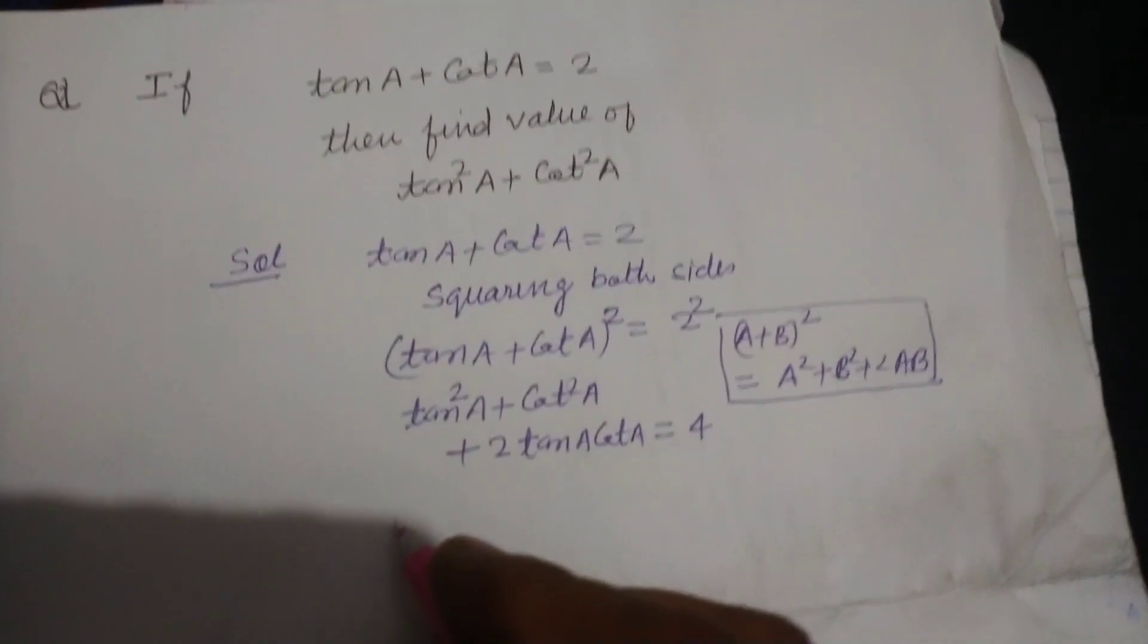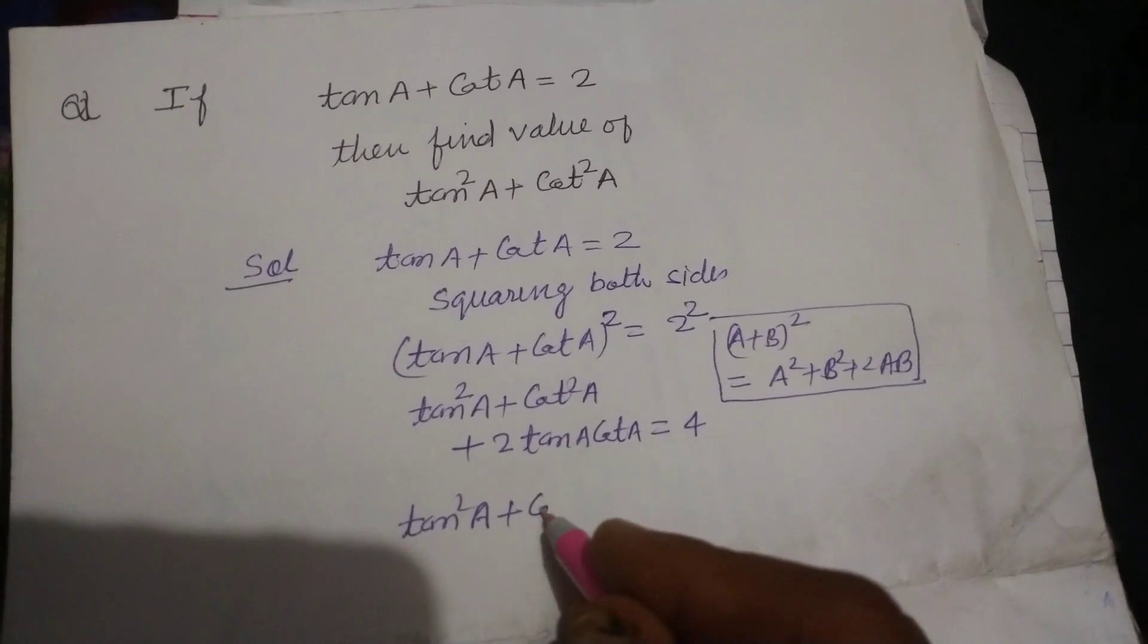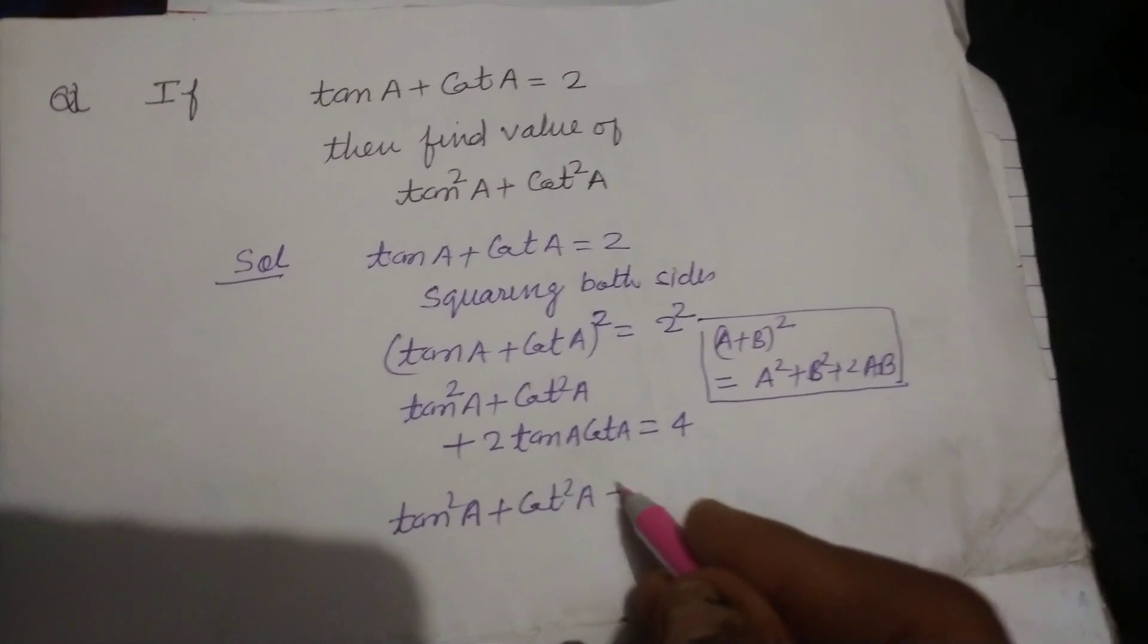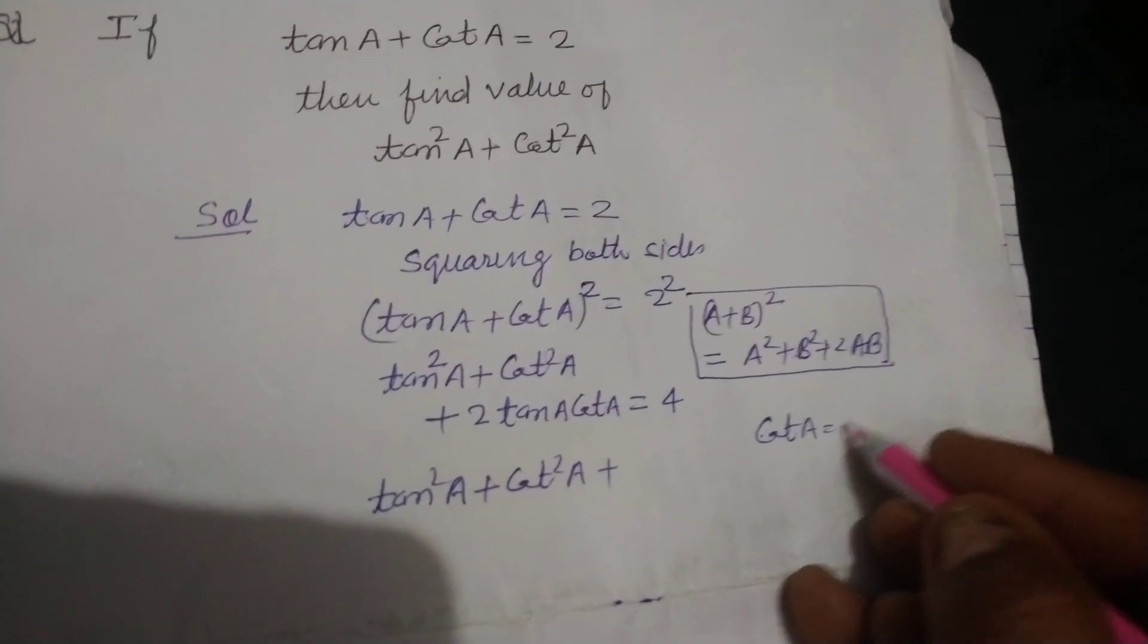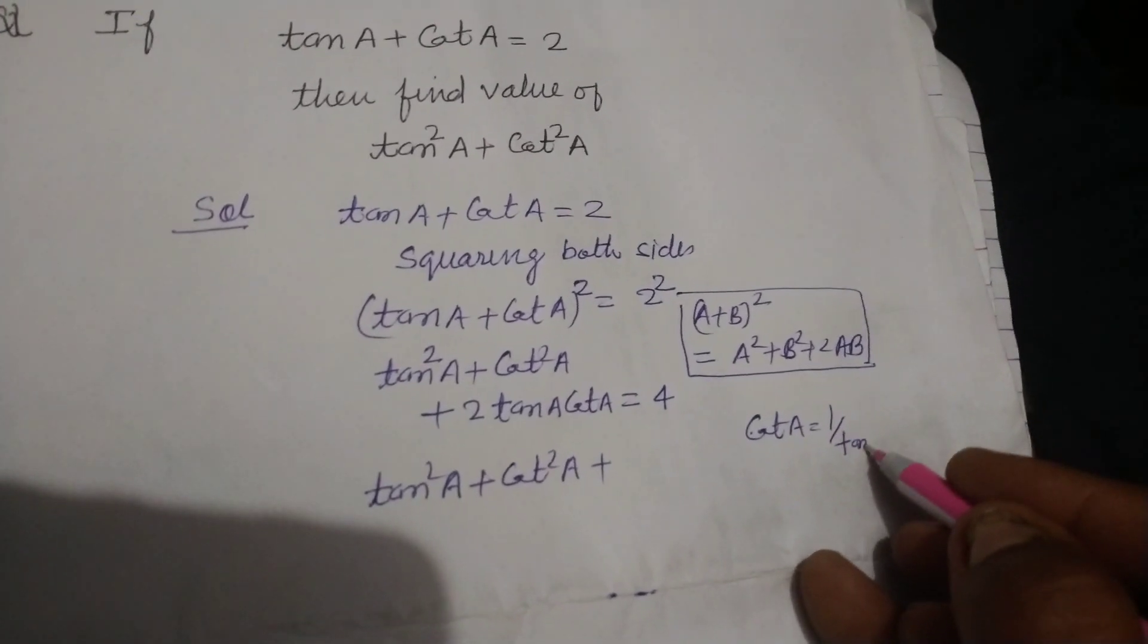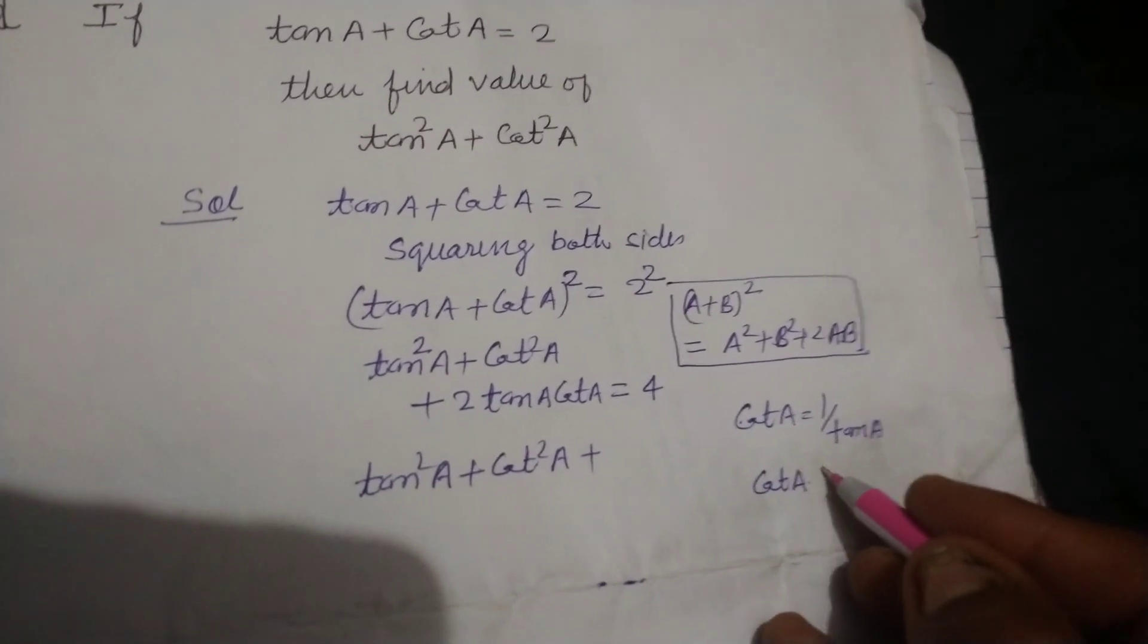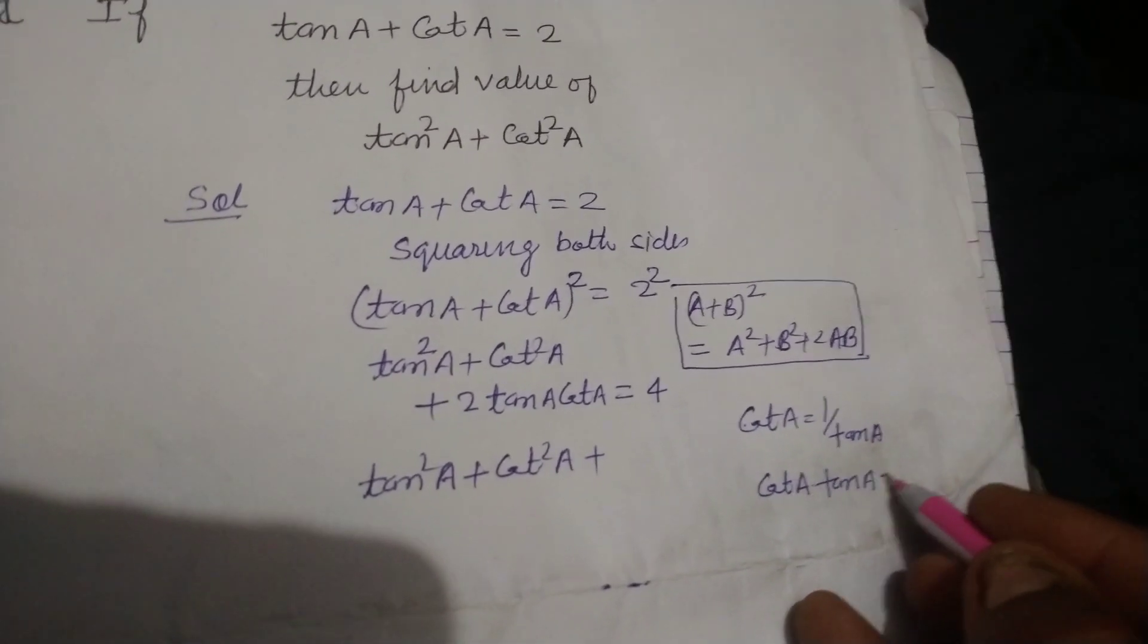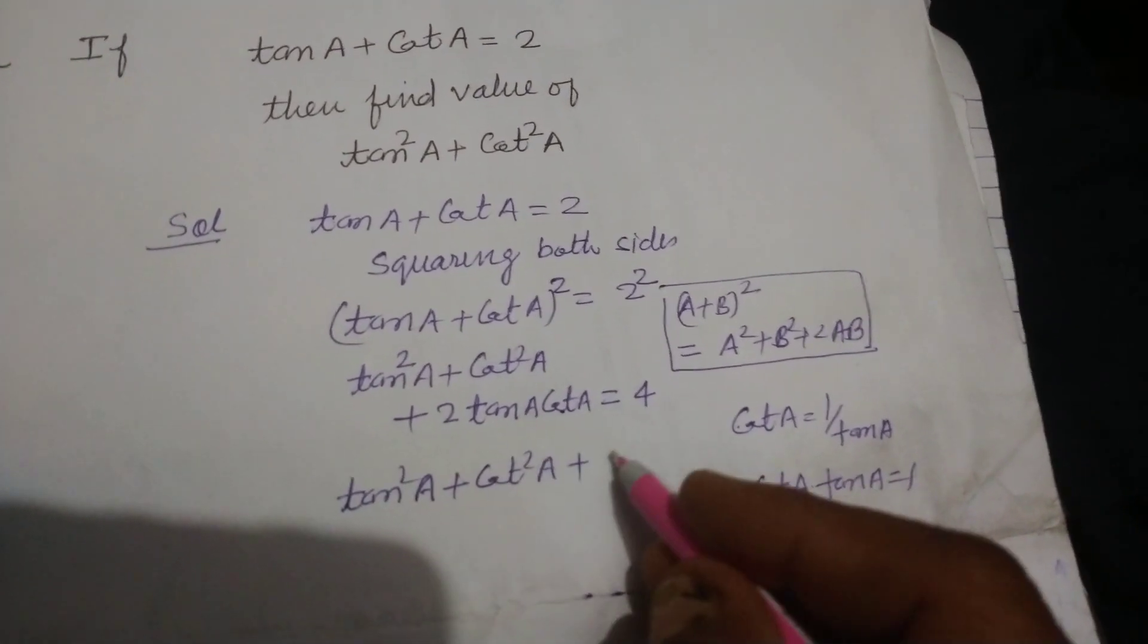So tan squared A plus cot squared A. And you know that cot A equals 1 upon tan A. So on cross multiplication, we get cot A into tan A equals 1. So we put cot A into tan A.